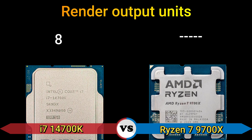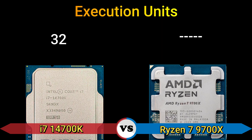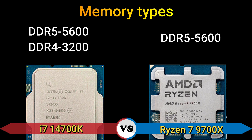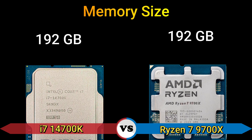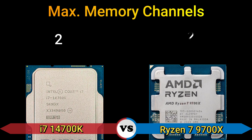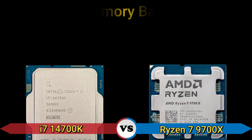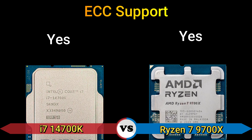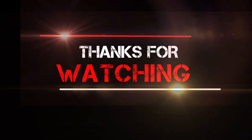Part 4 — memory. Memory types: DDR5 5600 MHz, DDR4 3200 MHz, and DDR5 5600 MHz. Memory size: 192 GB max. Memory channels: 2. Max memory bandwidth: 89.6 GB/s. ECC support: yes. Thanks for watching — for more updates, subscribe to my channel.